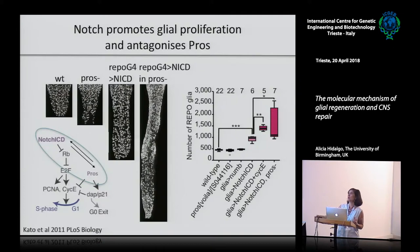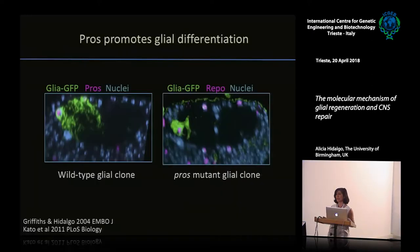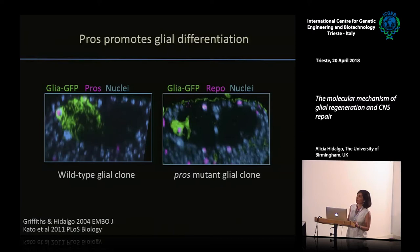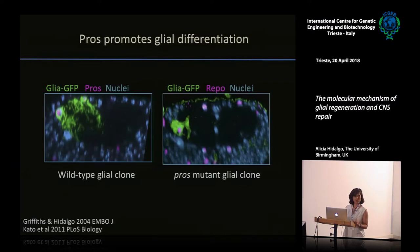Notch and Prospero have opposite functions on the cell cycle. When you remove the inhibitor Prospero and activate the cell cycle with Notch, glia goes crazy - they divide a lot. Notch is trying to tell glia to divide, and Prospero is trying to tell glia to stop dividing and differentiate. Here was a heroic experiment by Kentaro showing a clone of glial cells: two glial cells with their massive projections in wild type, and in a Prospero mutant the glia don't differentiate - the morphology is totally aberrant.